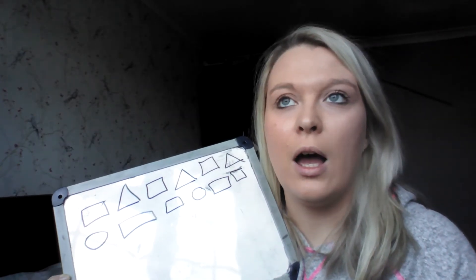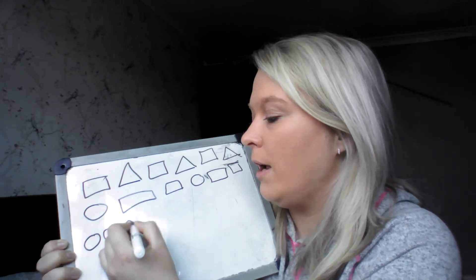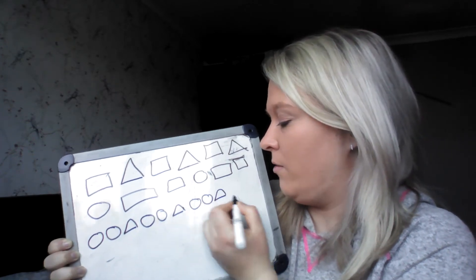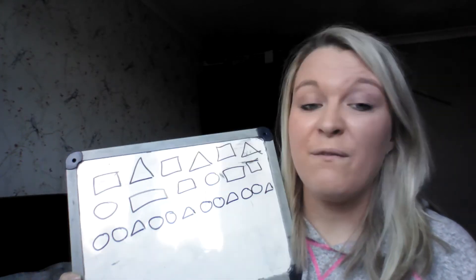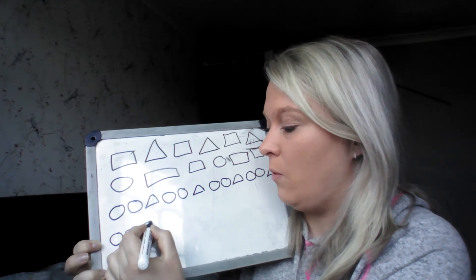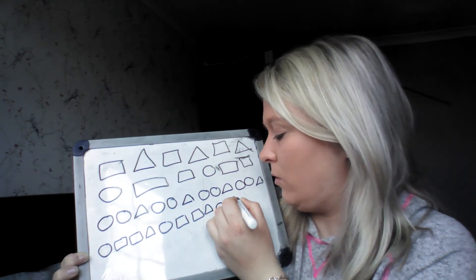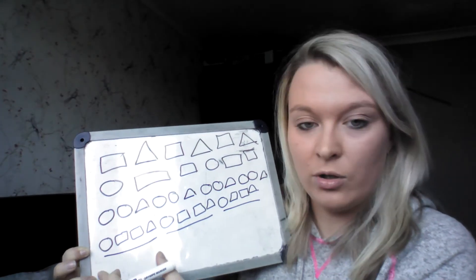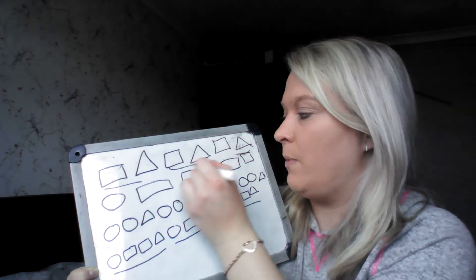You could have two things but have doubles of them. So you could have circle, circle, triangle, triangle, circle, triangle. What comes after the triangle? Circle, circle, triangle, circle, circle — and then if you wanted to do one more, it would be triangle. You could have three things and have doubles: circle, square, square, triangle, circle, square, square, triangle, circle, square, square, triangle. So this is the pattern here — that's the bit that's got to repeat: circle, square, square, triangle.